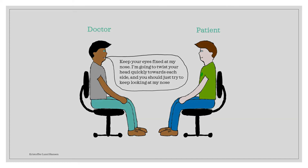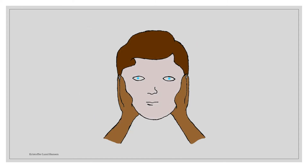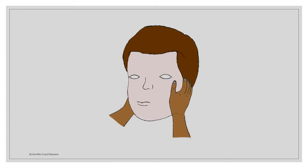Say something like: look at the nose, keep looking at it, I will take a hold of your head and I'm going to move it a bit around, and you're just going to try to keep looking at my nose. Now, you're going to take a hold of the patient's head in a similar manner as shown on the picture. It's a very good idea to just slightly move the head towards each side a few times in order to make the neck relax, so you don't strain any muscle. Then, without any warning, you will suddenly twist the head of the patient towards one side.